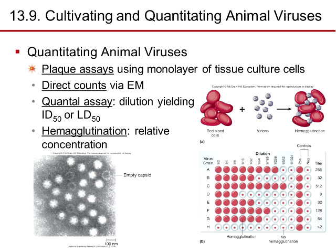Quantitating animal viruses: we use plaque assays using a monolayer of tissue culture cells. We can do direct counts via electron microscopy (EM), quantal assays such as the lethal dose ID50 or LD50, and hemagglutination, which looks at relative concentration of red blood cells and virons — hemagglutinins vs. no hemagglutinins — to examine different viral strains and what they cause.